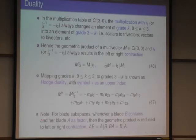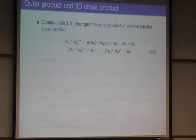And so for a blade subspace, whenever a blade B contains another blade A as a factor, then this also applies, then the geometric product becomes a contraction. We use it in this case.